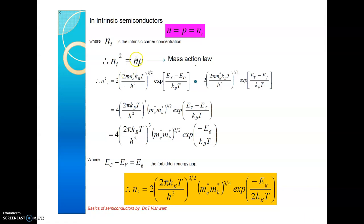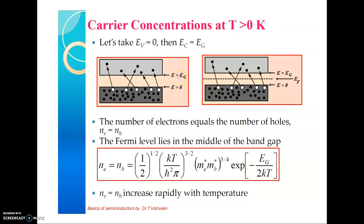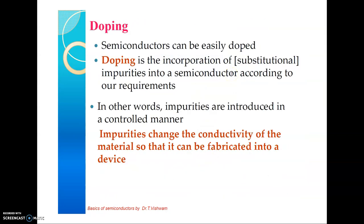By the mass action law, multiplying the density of electrons in the conduction band by the density of holes in the valence band gives the intrinsic carrier concentration squared. The intrinsic carrier concentration is directly proportional to the exponential of minus EG divided by 2kBT, and it depends on temperature. As temperature increases, the Fermi level shifts: downward if more holes are available in the valence band, and upward if more electrons are available in the conduction band.